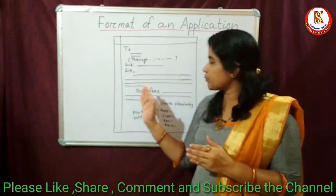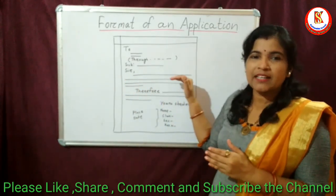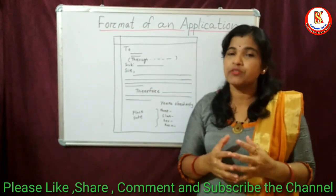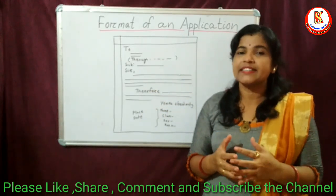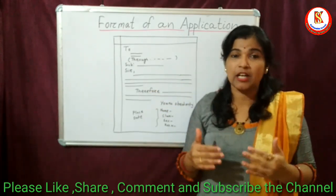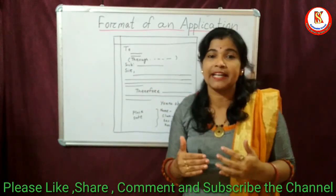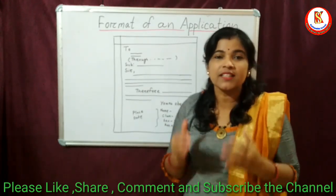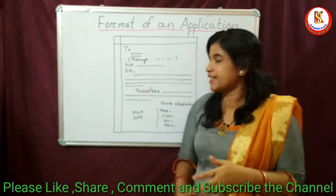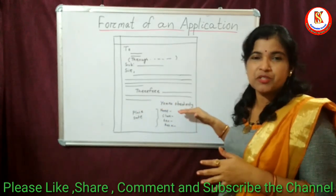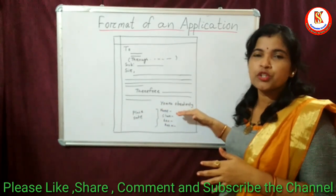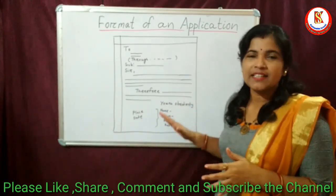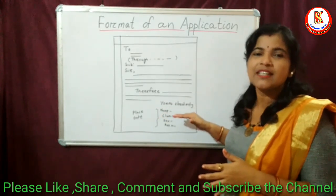Then we have two paragraphs. In the first paragraph, we write the content — the reason why we are writing this application. In the second paragraph, we write the request to the person concerned whom we are writing to. Then comes the subscription: 'Yours obediently.' And finally, the name of the student.